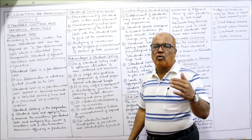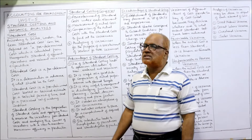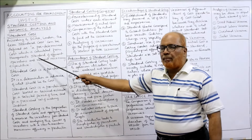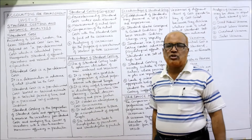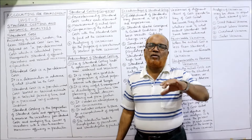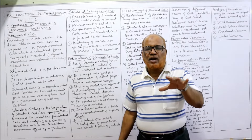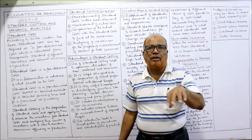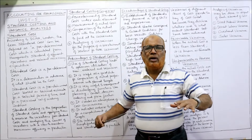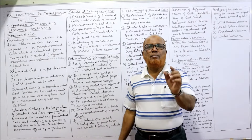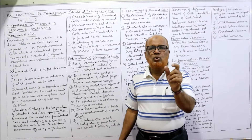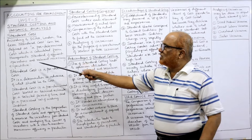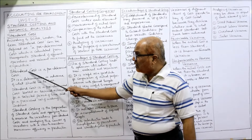Before learning standard costing you must know the meaning of the term standard cost. It can be defined as a predetermined cost which is calculated from the management's standard of efficient operations. So for conducting efficient operations, the management sets a target for what the predetermined cost should be. In order to efficiently utilize the resources, the management sets the target. It is a predetermined and relevant necessary expenditure — this is the definition given by ICMA London.